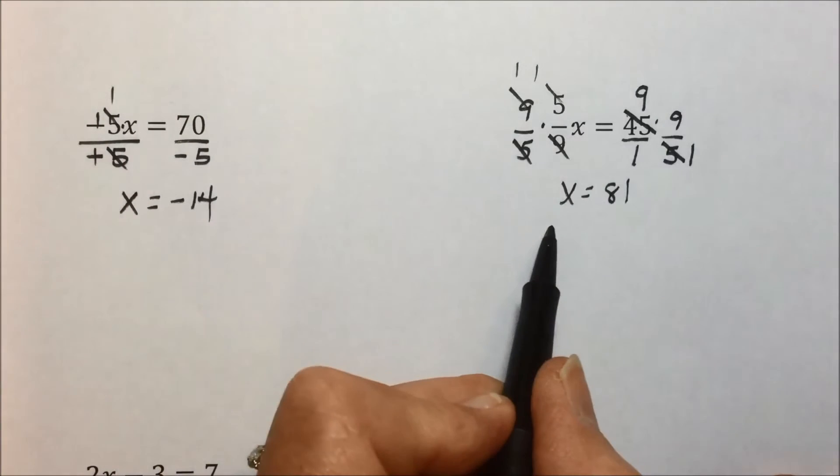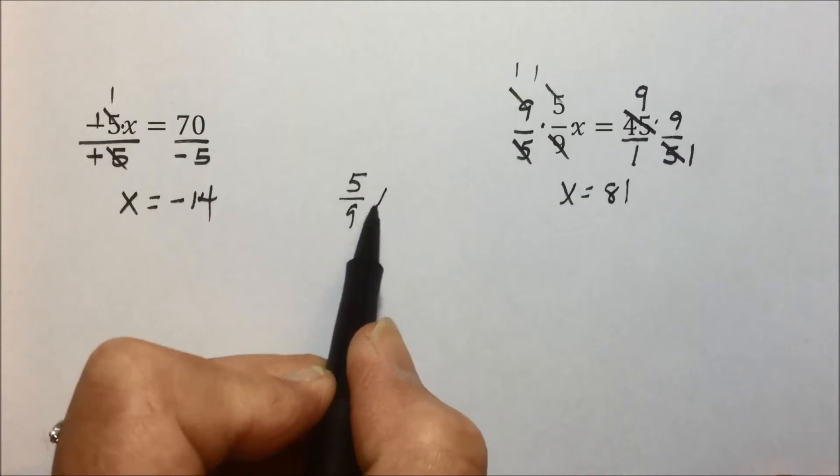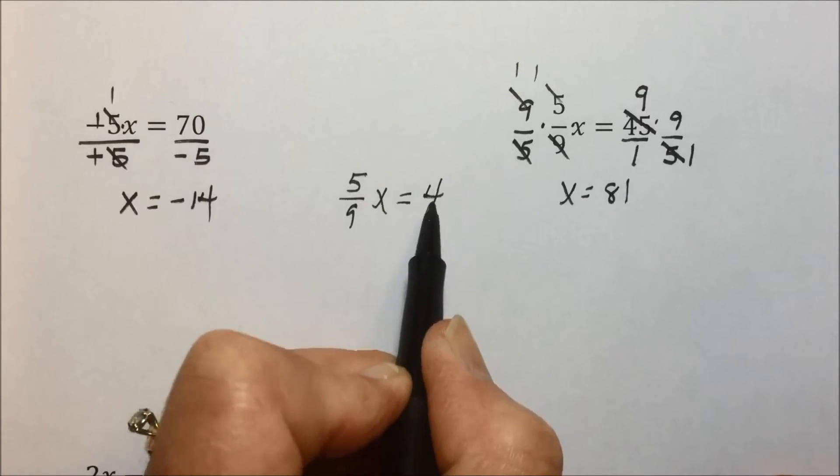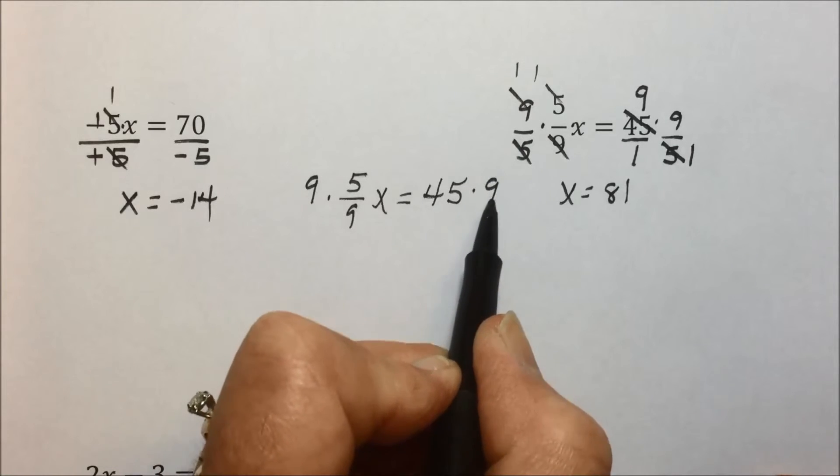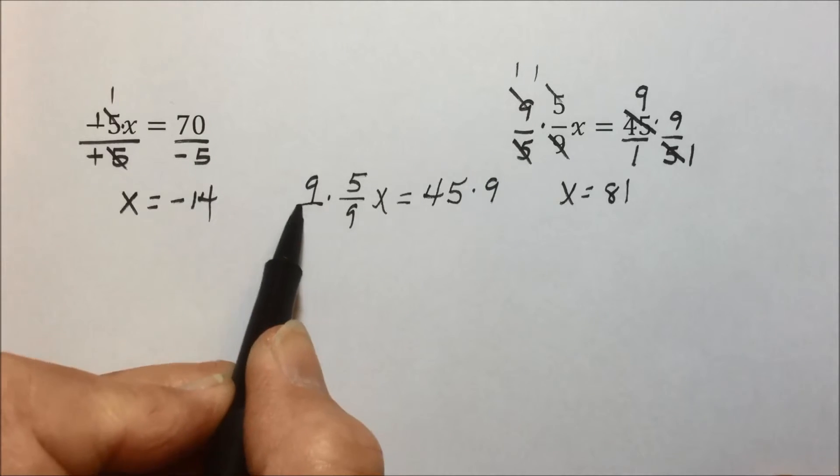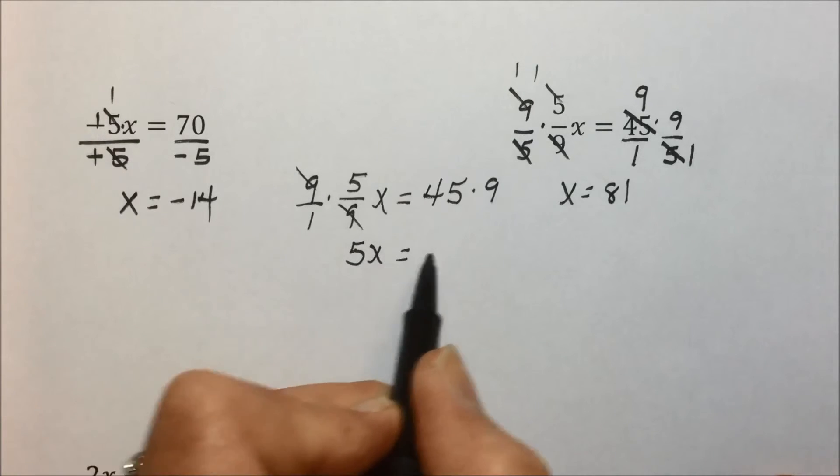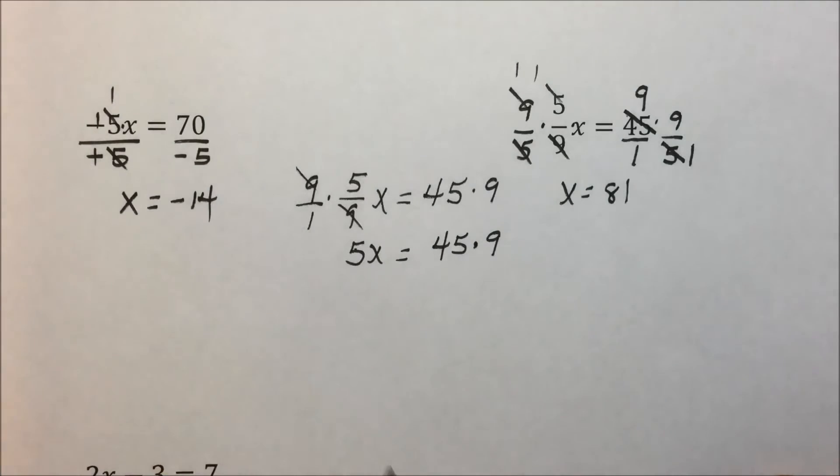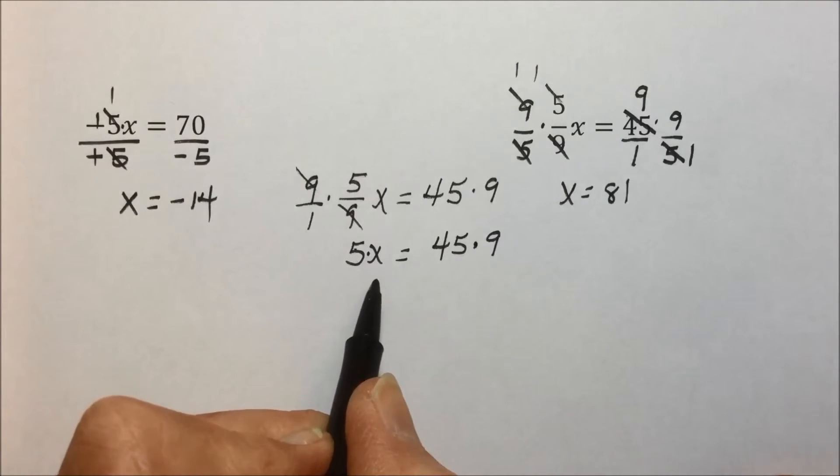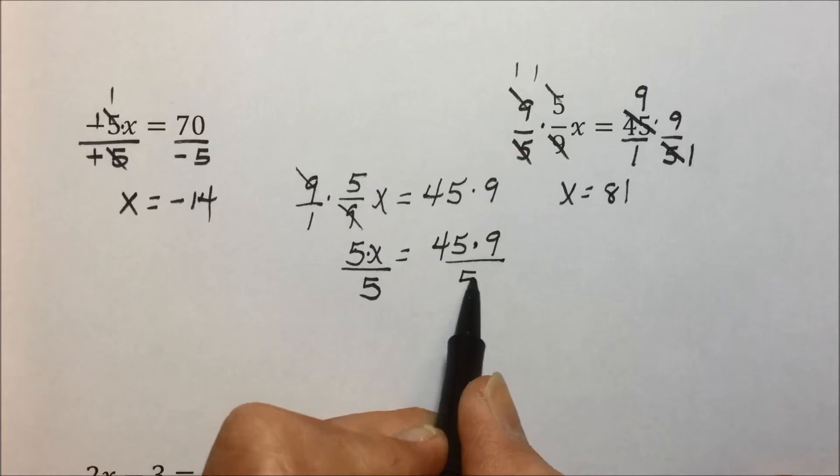The other approach to this would be, we have 5 9ths x equals 45. Eliminate the fraction by multiplying both sides by 9, so that this 9 over 1 cancels out the 9 in the denominator, leaving a 5x, and I'm going to leave this 45 times 9 for a moment. Then, last step to get x by itself, or to have a coefficient of 1, we'll divide both sides by 5.